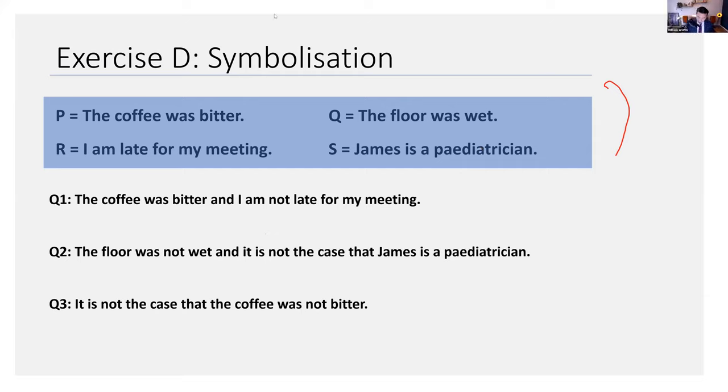Let's proceed. Let's do this one together. The coffee was bitter, and I am not late for my meeting. So what's coffee is bitter? That's P, and I am not late for my meeting. So that should be not R. Be careful of the not here. Did anyone get anything different?